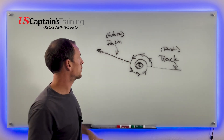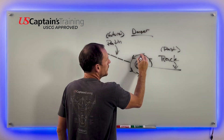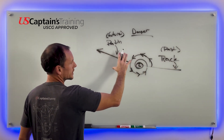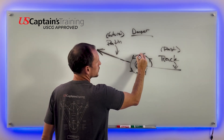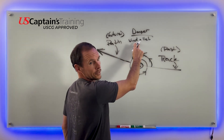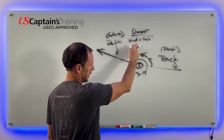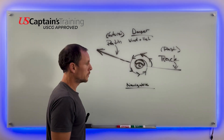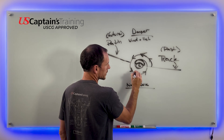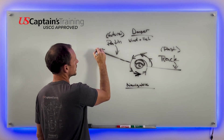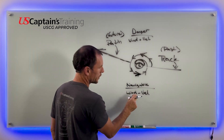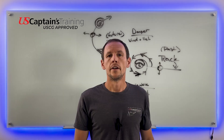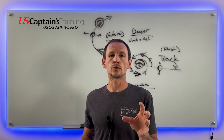There are two sides to this circle: the dangerous side and the navigable side. The dangerous side has wind velocities adding to the velocity of the storm — wind plus velocity of storm equals higher winds and higher waves on the dangerous side. The most dangerous part of the hurricane is right there. On the navigable side, wind direction is opposite to the velocity of the storm, so wind minus velocity means less waves and less wind. It's still very dangerous, but it's called the navigable side.